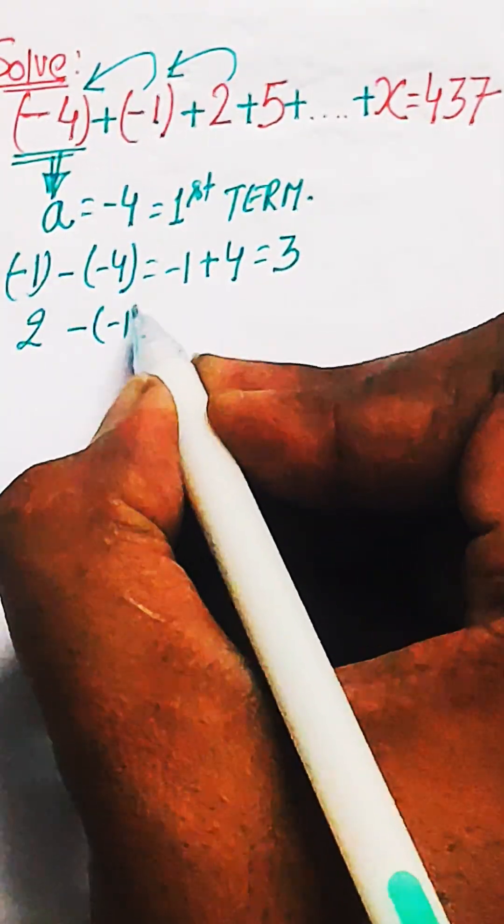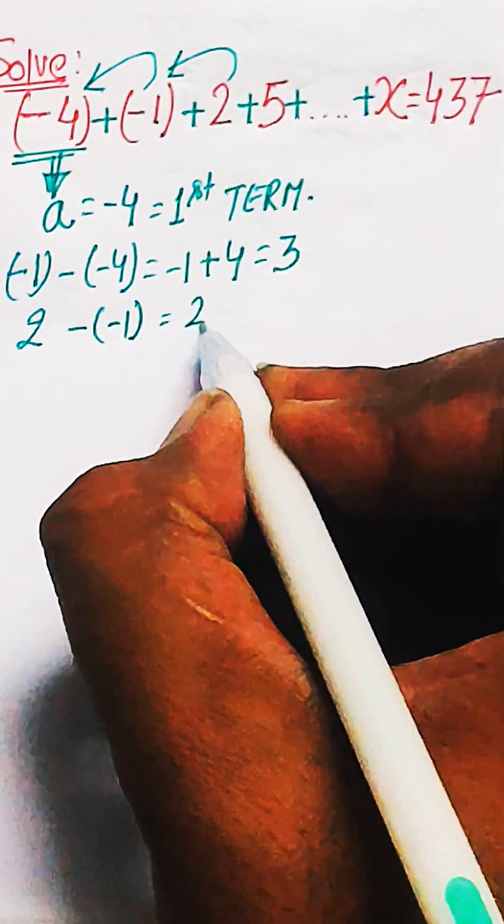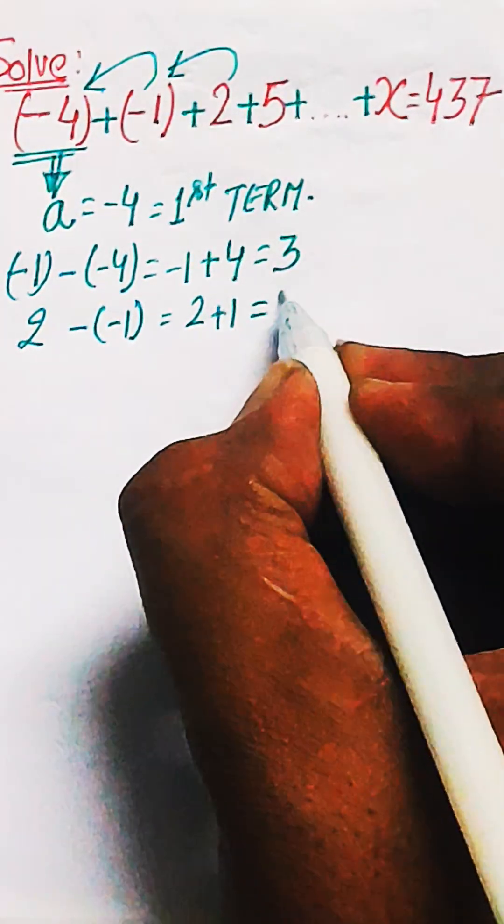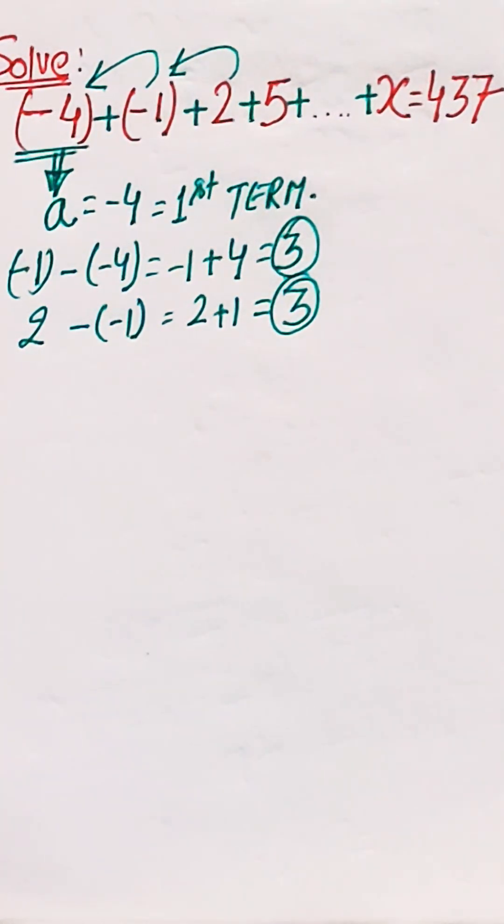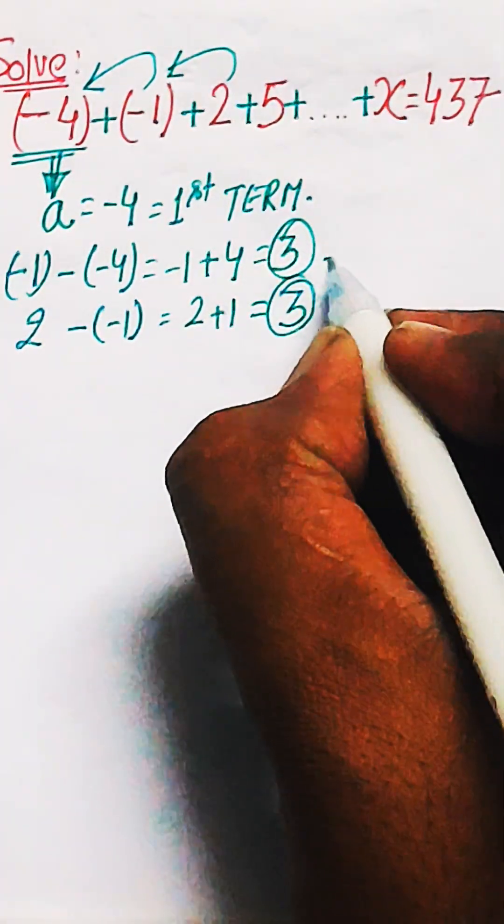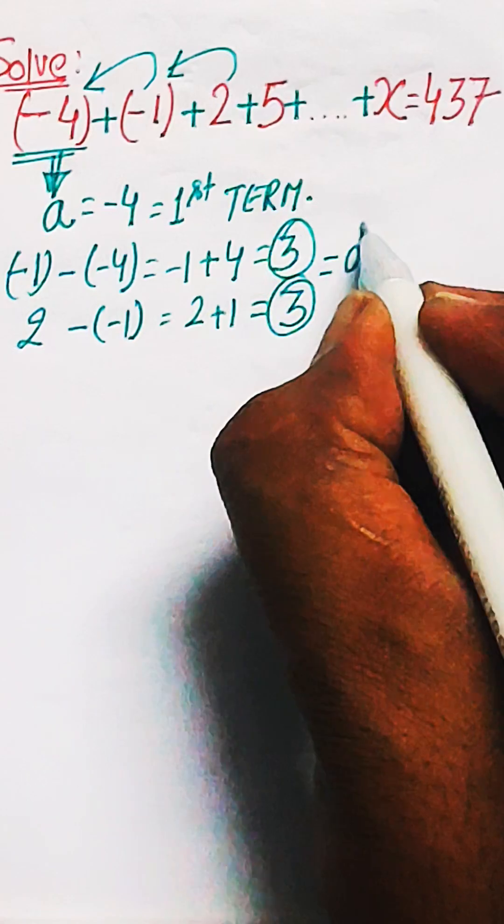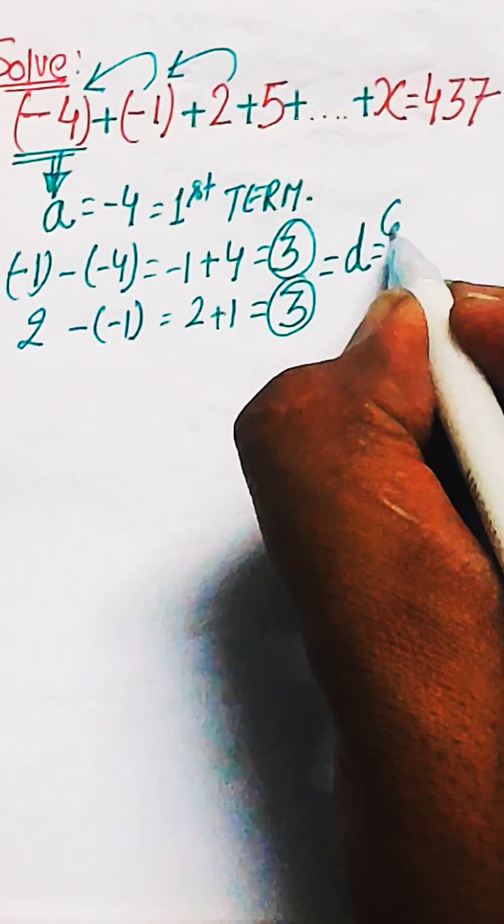Just check it again and subtract the second term from the third. That is 2 minus minus 1, which is 2 plus 1 which is 3. So you can see every time the common difference is coming as the same. So the common difference D is equal to 3. This is calculated now.